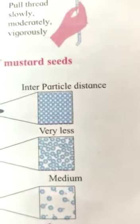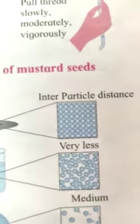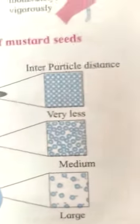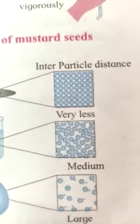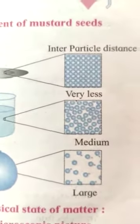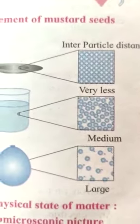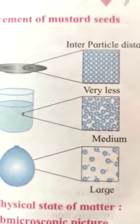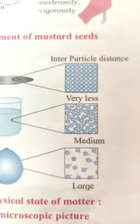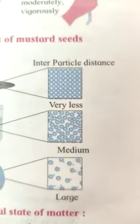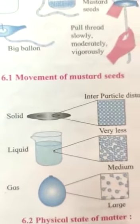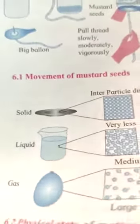Interparticle distance is very less in solid state, medium in liquid state, and very large in gaseous state. This is the arrangement of molecules in solids, liquids, and gases.